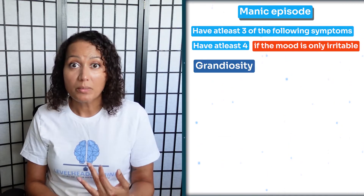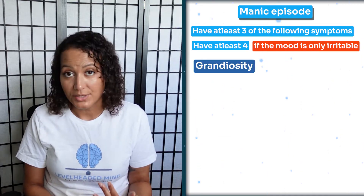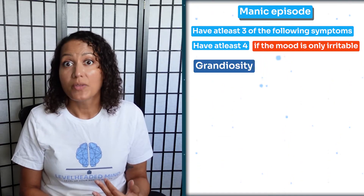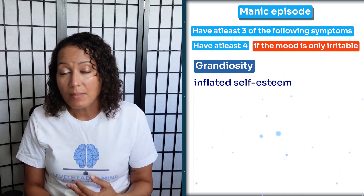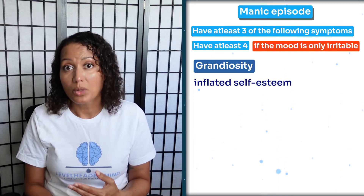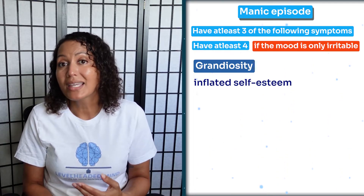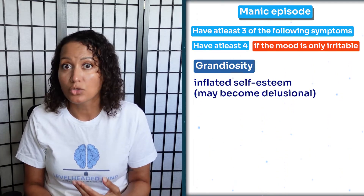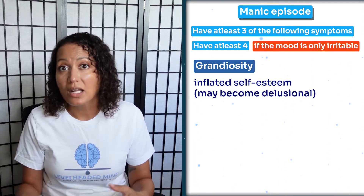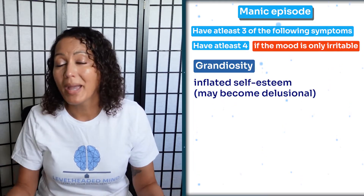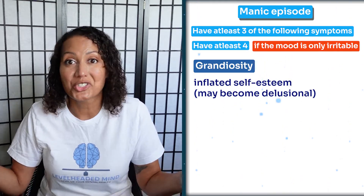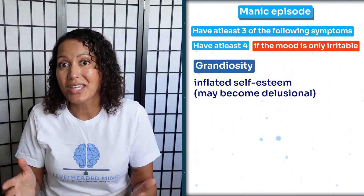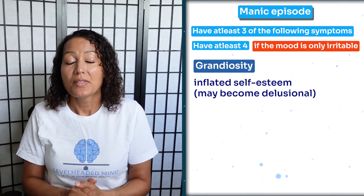The first symptom is grandiosity — an inflated self-esteem that may get to a point where they become delusional, thinking that they're God, that they have special powers, and that they are unstoppable.